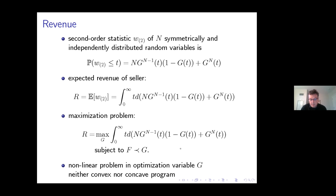A few observations: first, the instrument G appears in a highly non-linear manner in this objective function, raised to the power of n minus 1 or n, and appearing in this product. Second, the constraint that G dominates F is in fact a continuum of constraints in terms of the integral inequality. So it seems to be a rather inaccessible program — it's non-linear, it's neither convex nor concave, and it has a continuum of constraints.